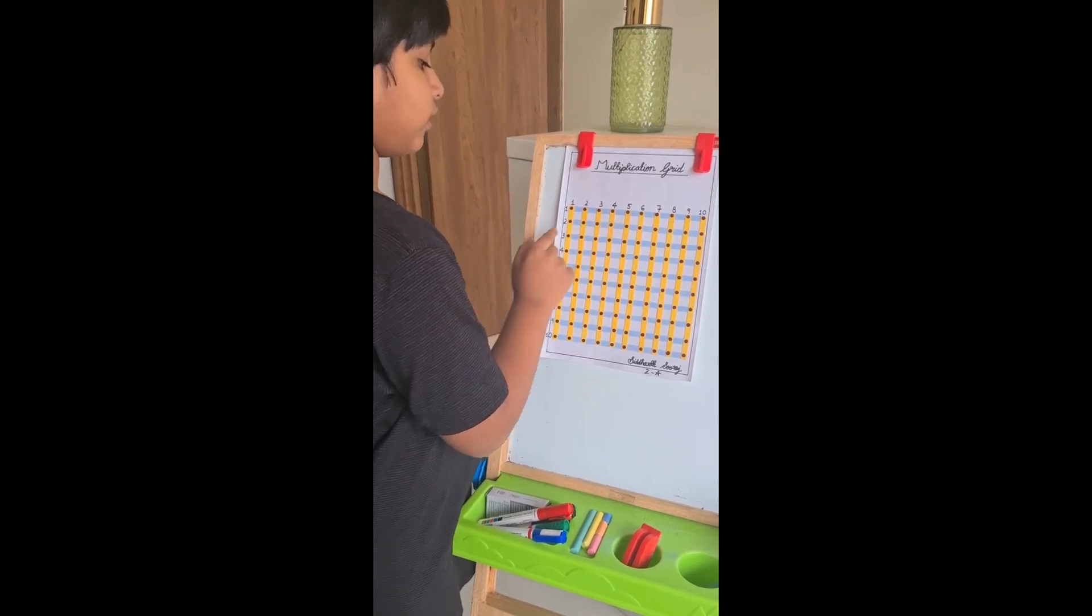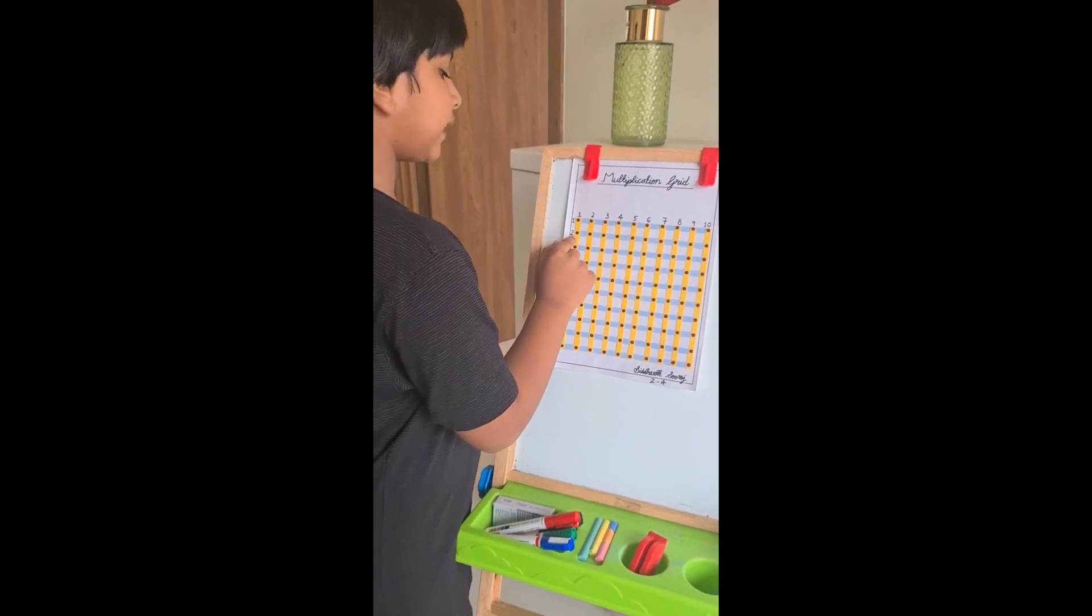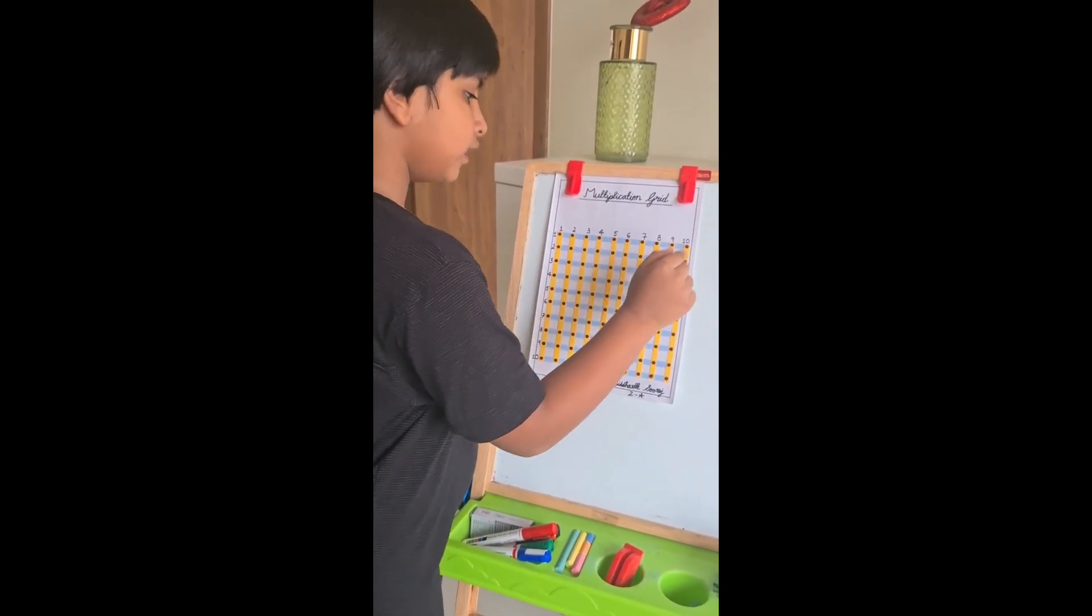Now, coming to second row. Again, there are 10 more bindis. So, 10 times 2 equals 20.